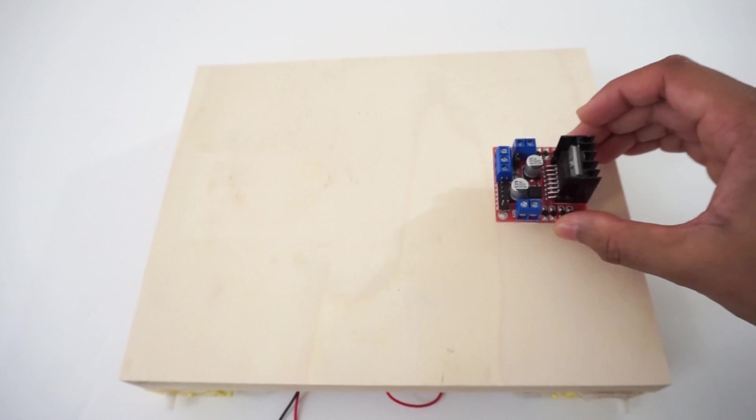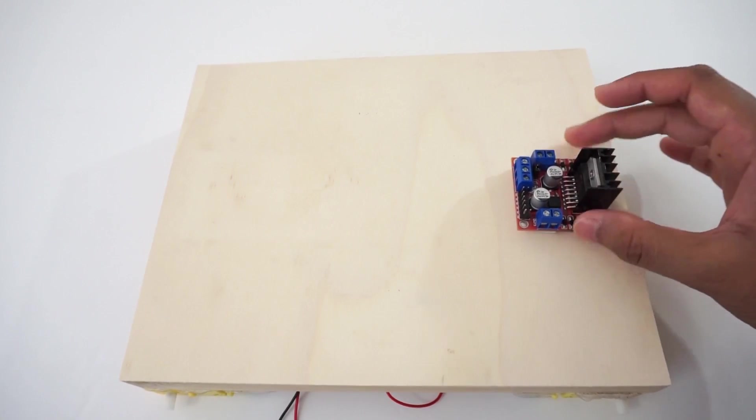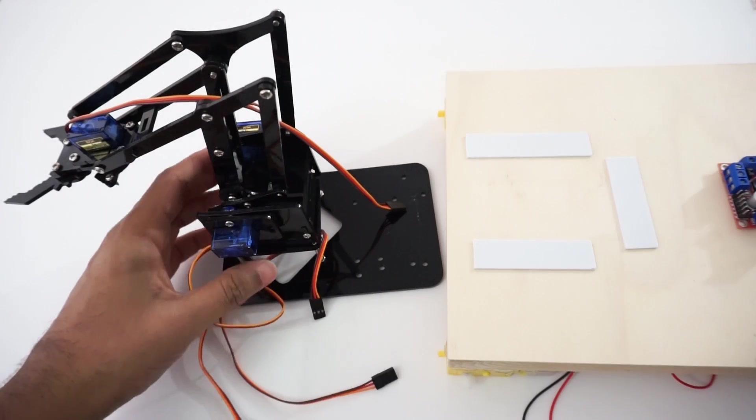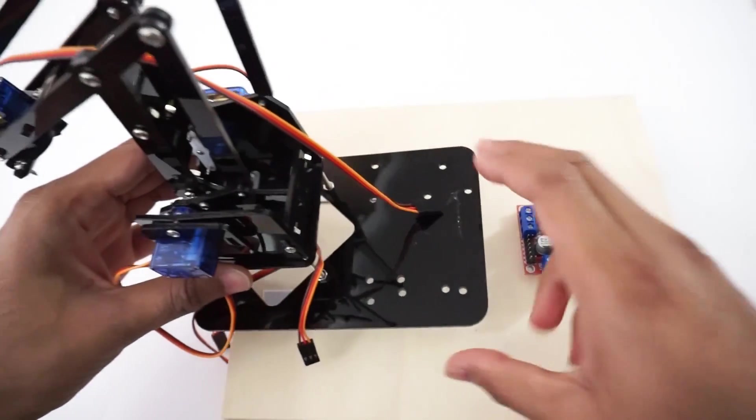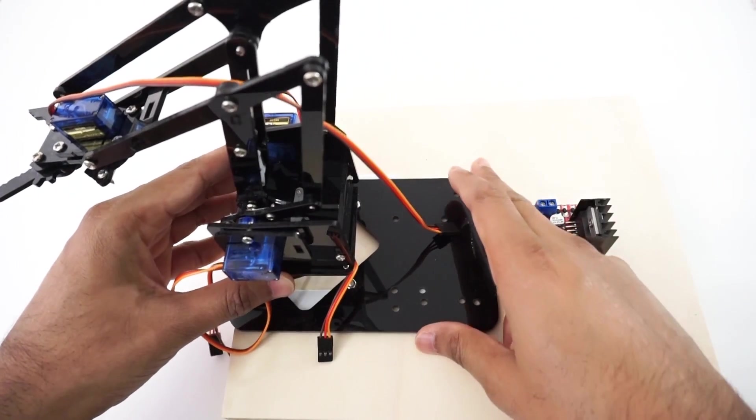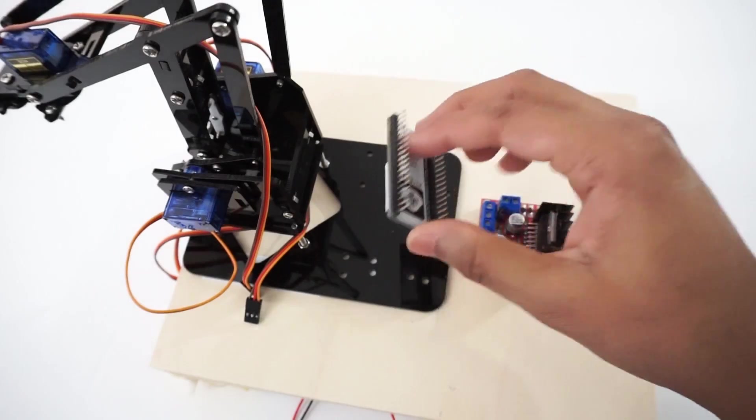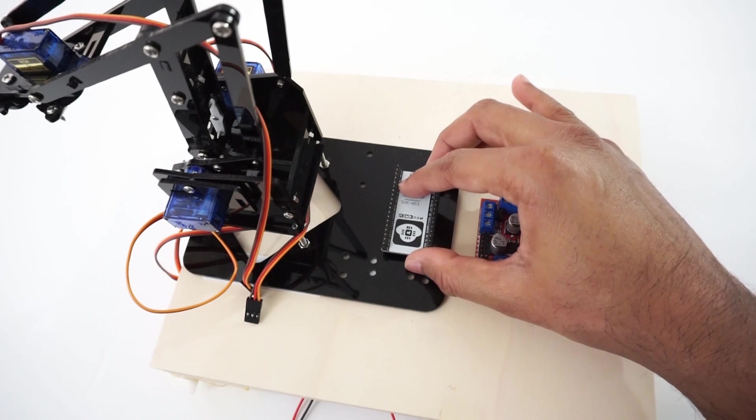Attach L298N motor driver module on car chassis using double-sided tape. Mount Roboarm on car chassis now. Fix ESP32 module on arm base using double-sided tape.